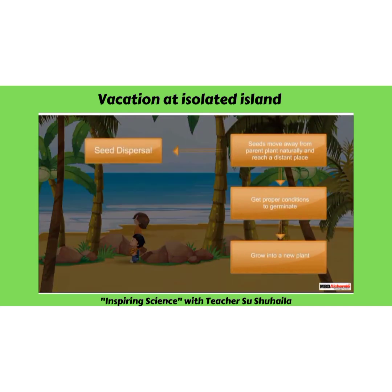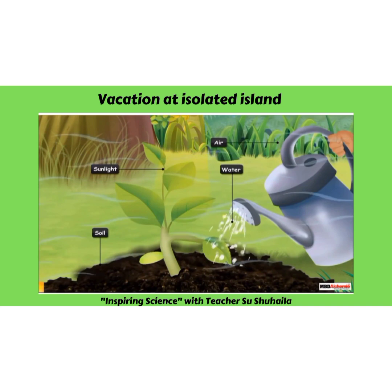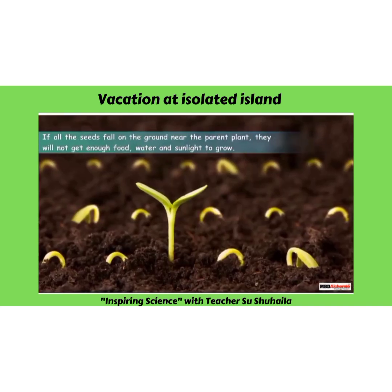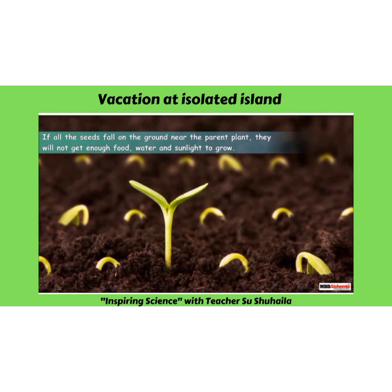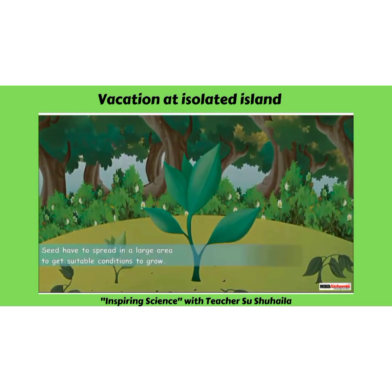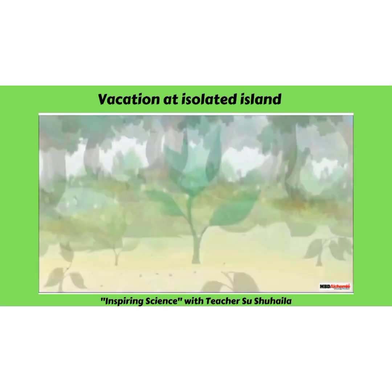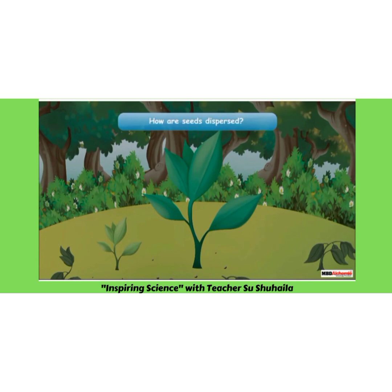This is how dispersal works. Seed dispersal is important for the proper growth of plants. If all the seeds fall on the ground near the parent plant, they will not get enough food, water and sunlight to grow. So seeds have to spread in a large area to grow well. Now you know what seed dispersal is and how important it is. The next question is: how does it occur?